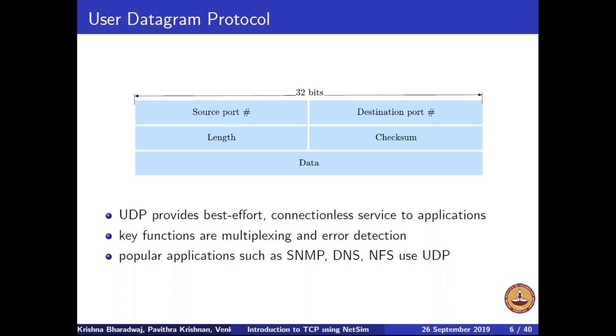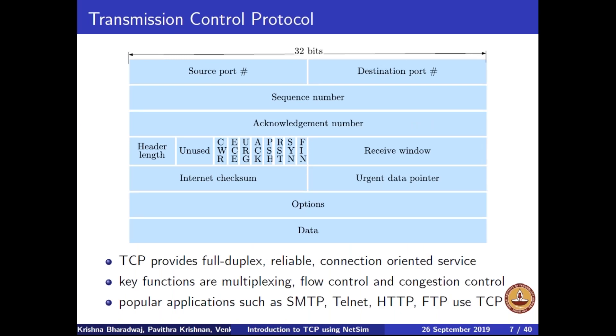Many applications like file transfer require reliable communication, so we turn to TCP, which is the focus of today's talk. TCP, unlike UDP, provides full-duplex (two-way) communication, reliable and connection-oriented service on top of an unreliable best-effort service provided by IP. To provide these services, TCP requires a much larger header than UDP. In addition, TCP requires buffer allocation at both the sender and receiver side and needs to maintain other states and variables to support these functionalities. Key functions supported by TCP include reliability, congestion and flow control, and multiplexing. Popular applications such as SMTP, Telnet, HTTP, and FTP use TCP.